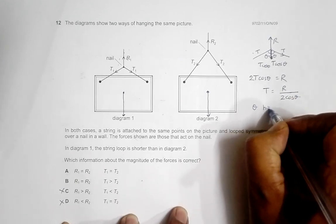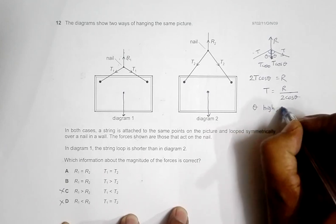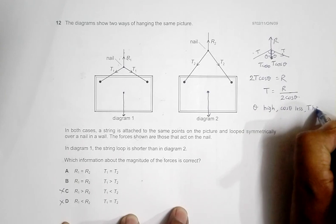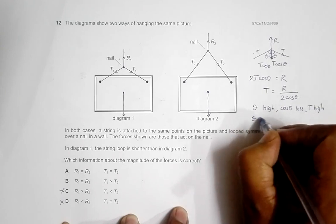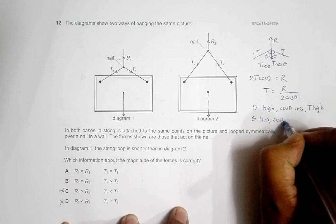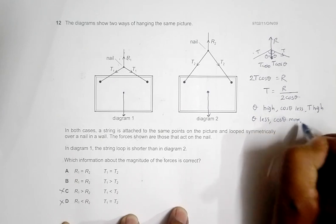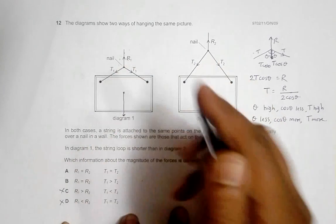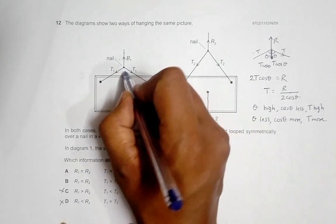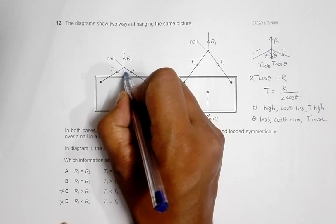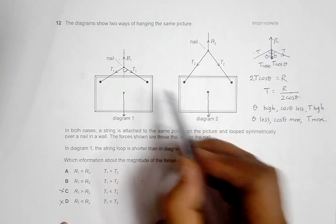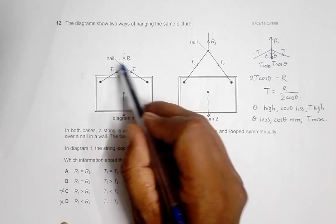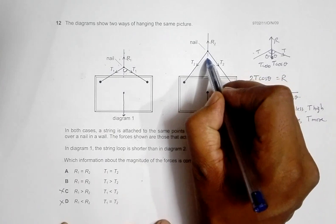If theta is high, cos theta is less and T becomes high. If theta is less, cos of theta will be more and T will be less. In this case, theta is more, so theta high means the tension force should be high. So T1 should be high.